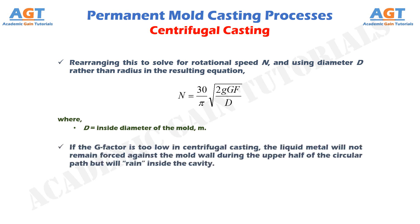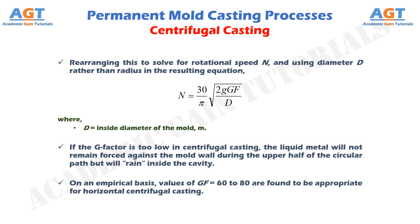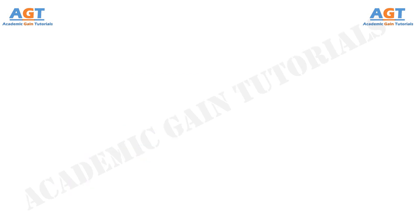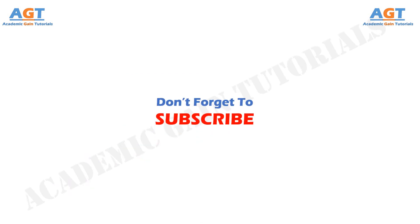If the G factor is too low in centrifugal casting, the liquid metal will not remain forced against the mold wall during the upper half of the circular path but will fall inside the cavity. On an empirical basis, values of GF equal to 60 to 80 are found to be appropriate for horizontal centrifugal casting. So, we have studied centrifugal casting, which is one of the permanent mold casting processes. Thank you.